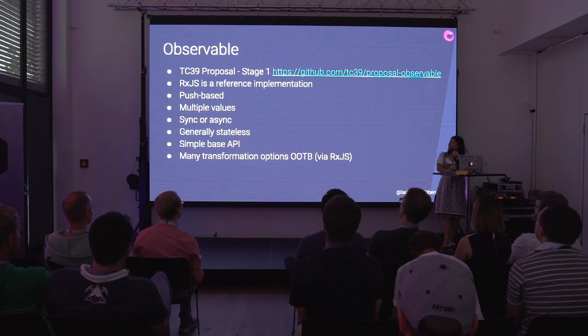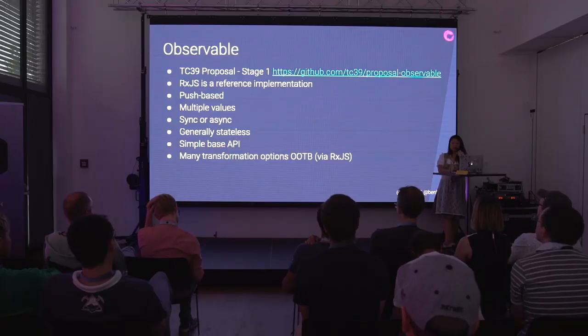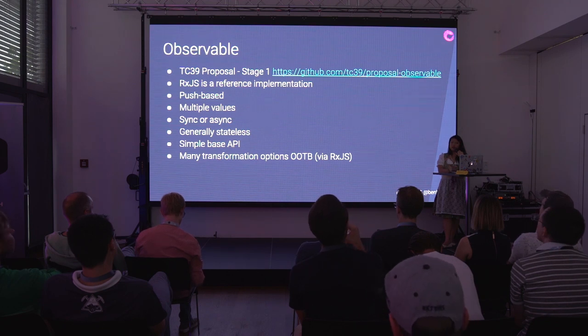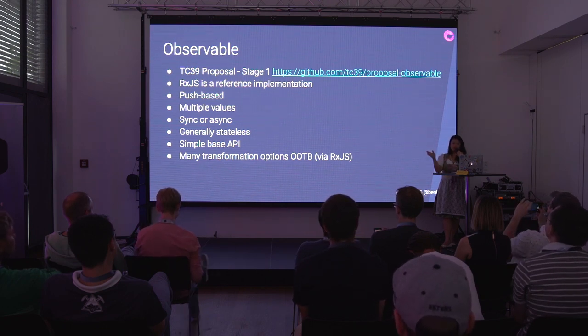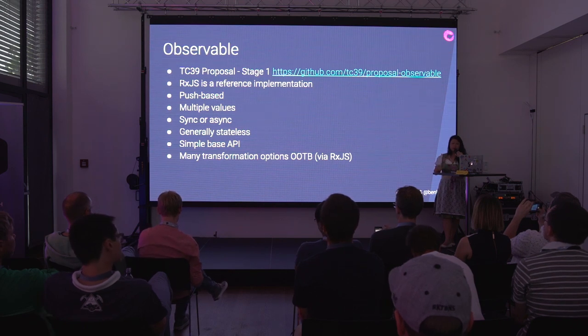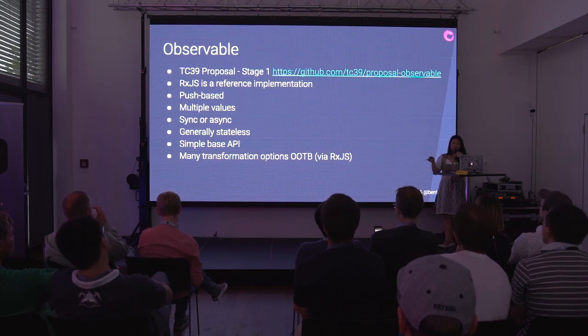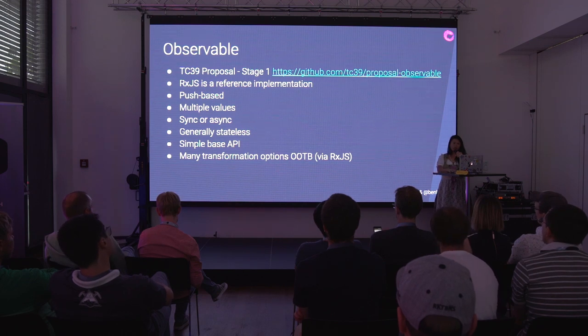Observables — our favorite thing. This is currently a TC39 proposal at stage one. You can look at it on GitHub and comment on it. RxJS is a reference implementation of the observable proposal. Observables are push-based, you can have multiple values, synchronous or asynchronous, generally stateless — meaning you can reuse them just like functions. They have a simple base API and many transformations out of the box with something like RxJS.